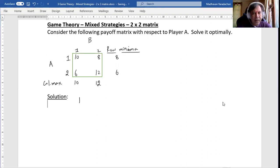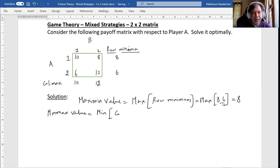Then we will find out what is the maximum value. Here it is maximum of all the row minimums, which is maximum of 8, 6 which becomes 8. And then minimax value, which is minimum of column maximums. Here it is minimum of 10, 12 which is 10. So we may note that maximum value is not equal to minimax value.